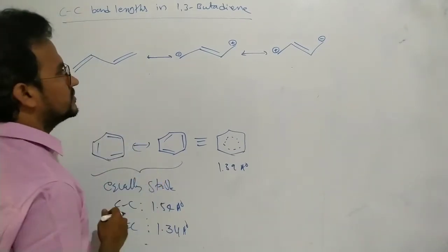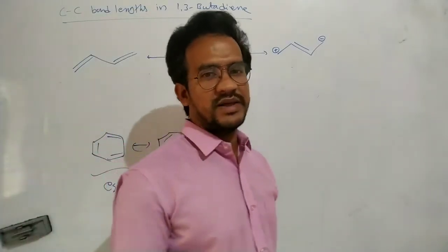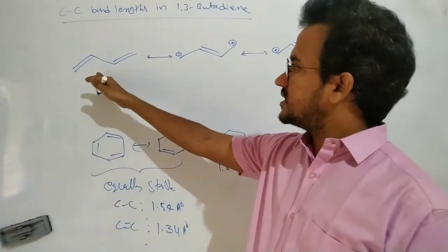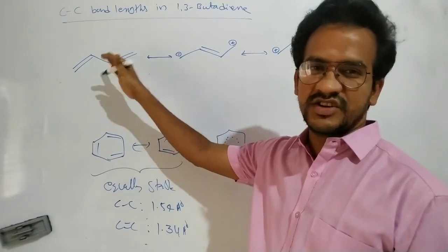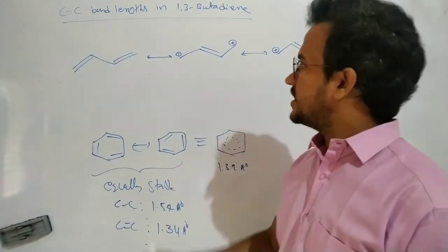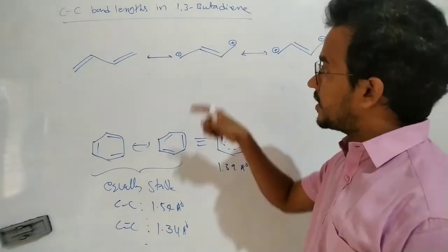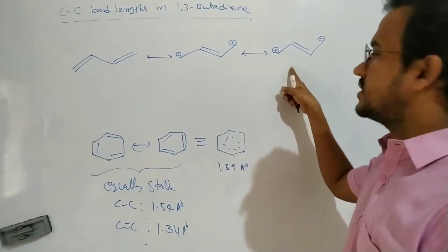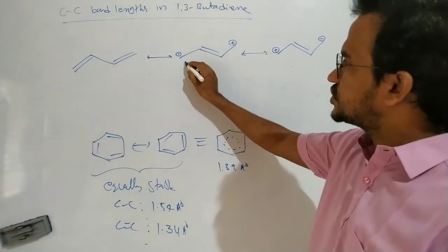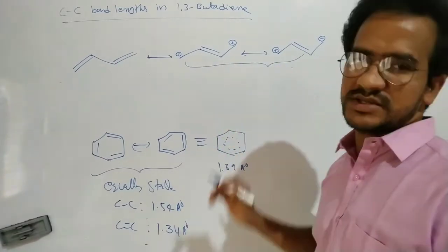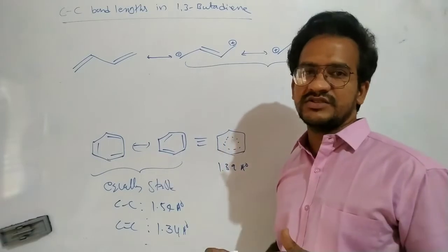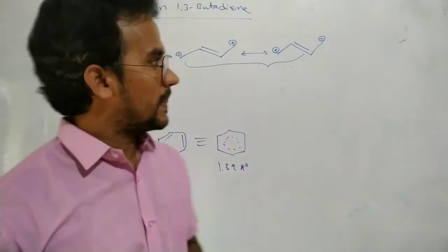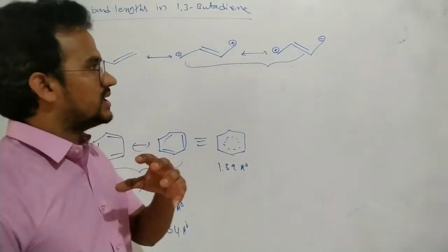Now in 1,3-butadiene, all carbon-carbon bonds are not equal. Here also you can see there is resonance. But in this case, one structure is a neutral molecule with more number of covalent bonds. The other resonance structures have less number of covalent bonds and there is a charge separation. All these three resonance structures of 1,3-butadiene are not equally stable.